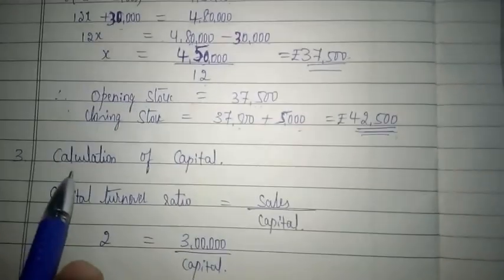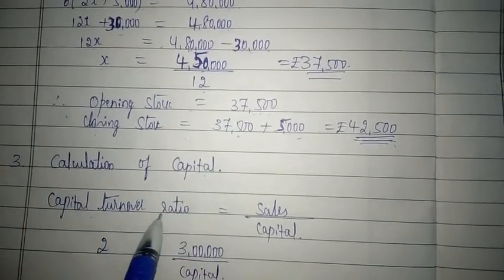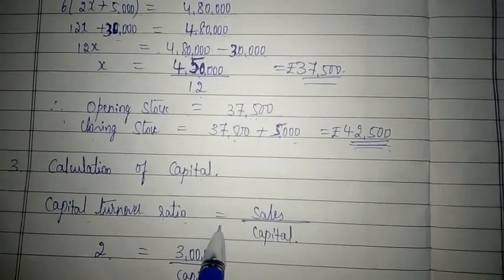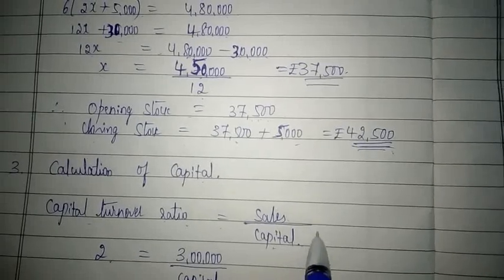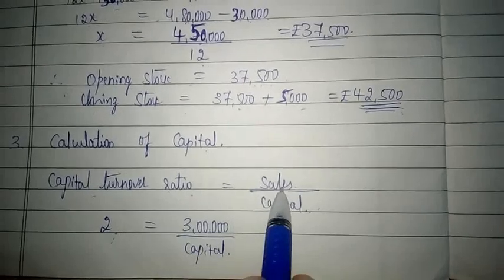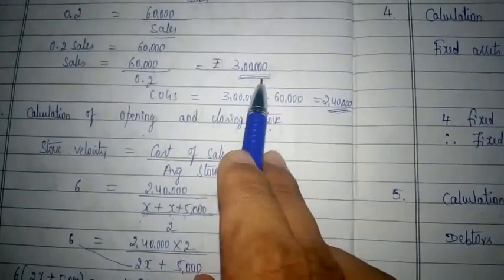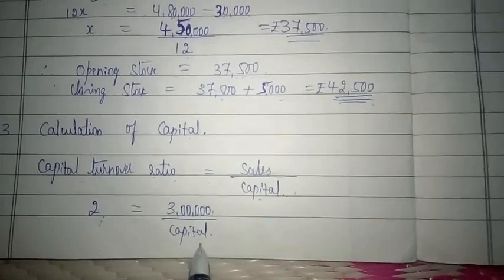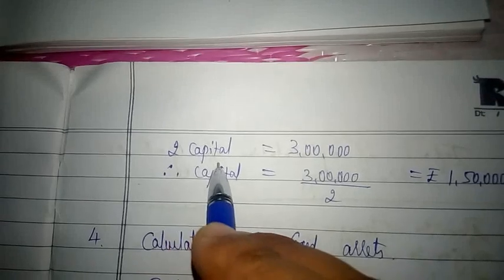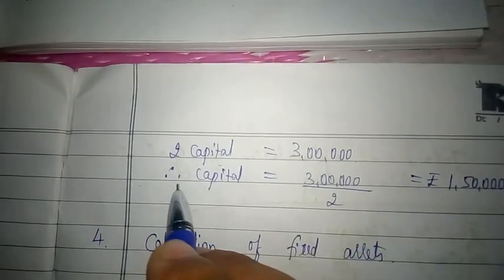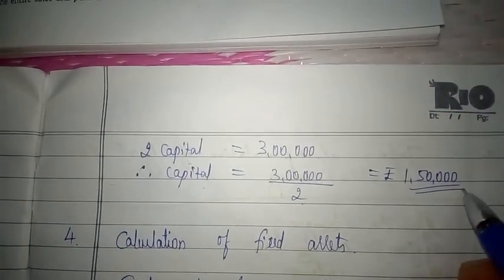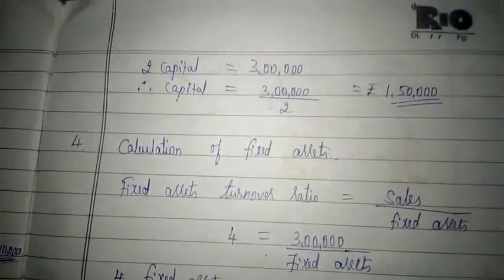The third calculation is capital, using the capital turnover ratio. The formula is: Capital Turnover Ratio = Sales ÷ Capital Employed. Capital turnover ratio is 2 times and sales is 3,00,000. Cross-multiplying: 2 × Capital = 3,00,000, so Capital = 3,00,000 ÷ 2 = rupees 1,50,000.